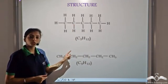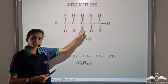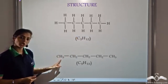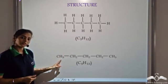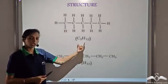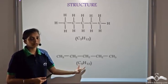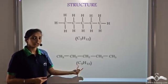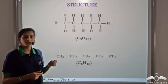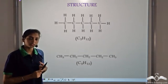We can also use the abbreviated or condensed formula for this structural formula. In this case, we do not show the covalent bonds present between carbon and hydrogen atoms. The molecular formula remains the same, that is C5H12.